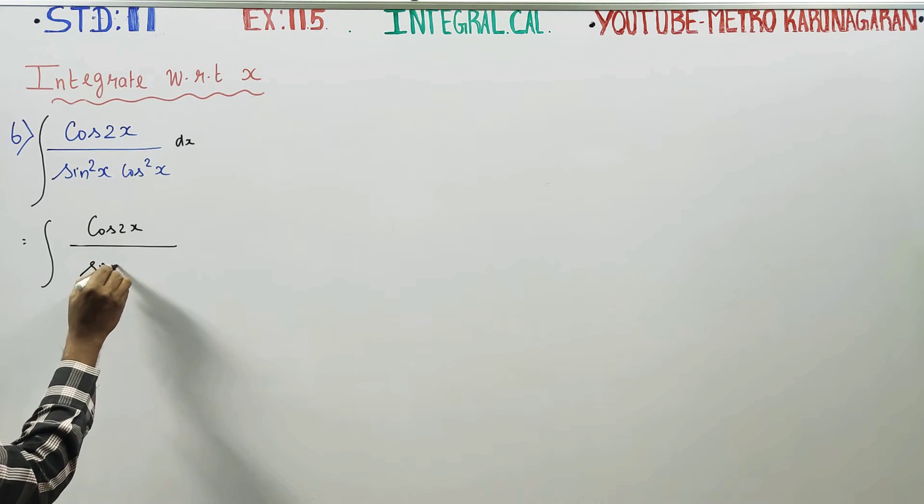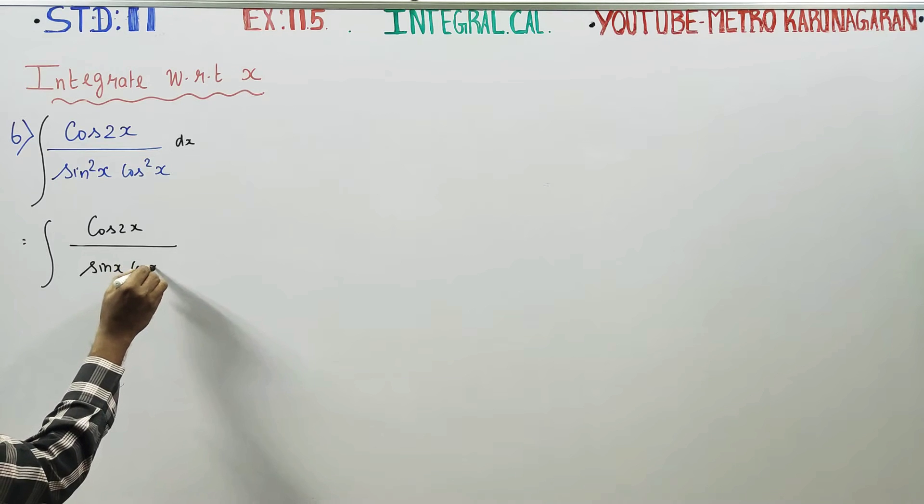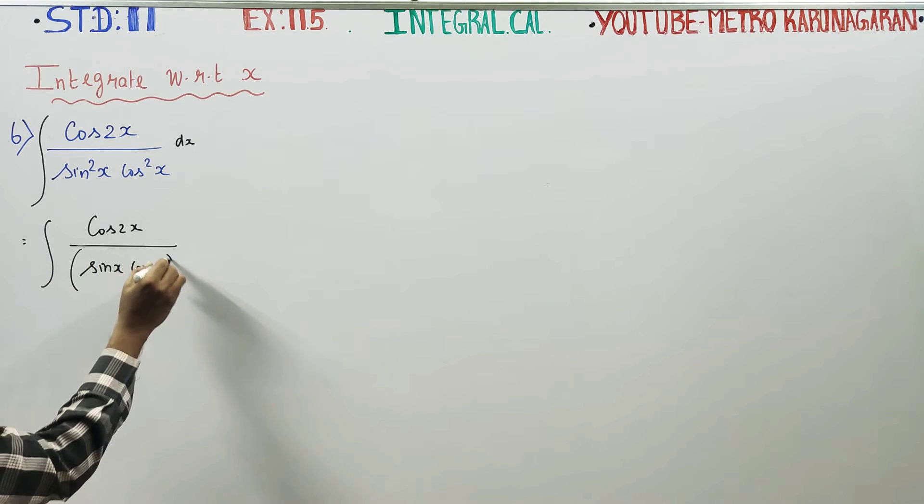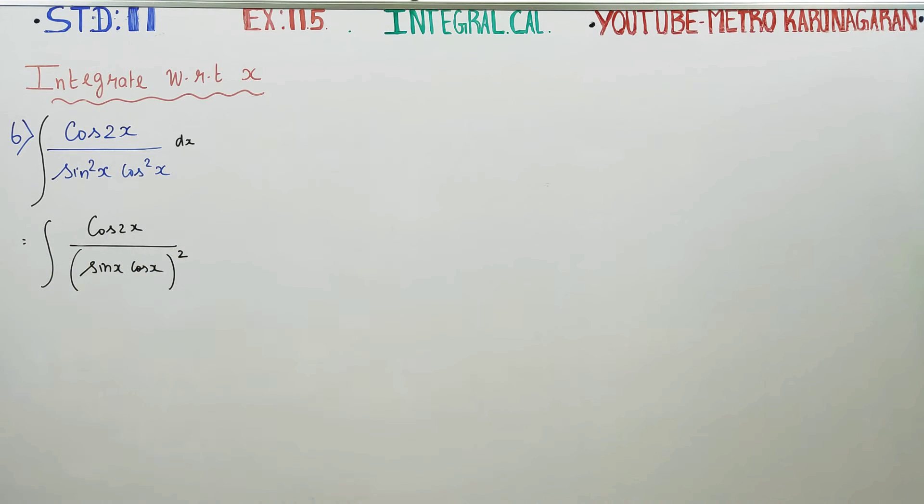The denominator can be written as sin x cos x whole square. After this, we have integration of cos 2x by sin x cos x whole square.